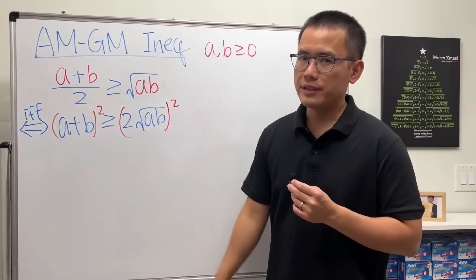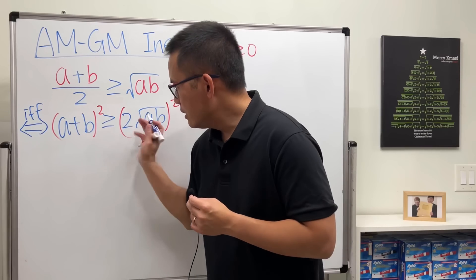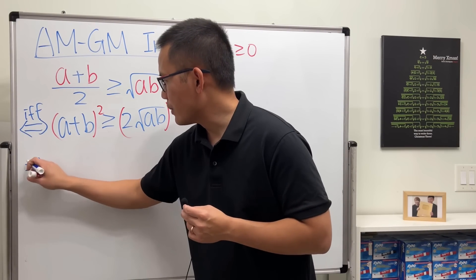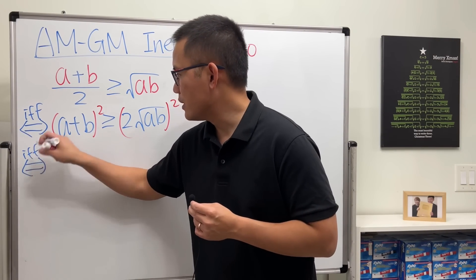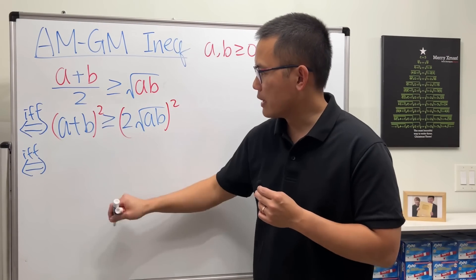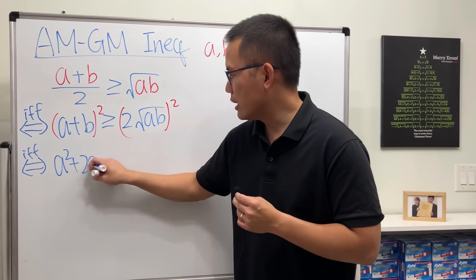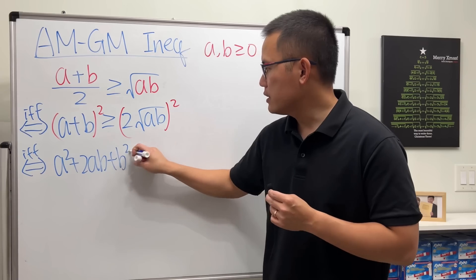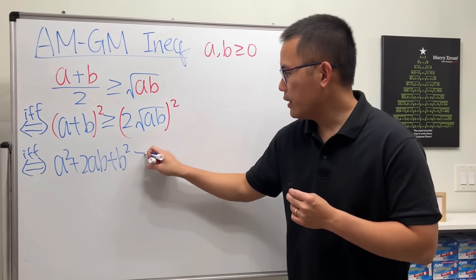So this will give us the following—and again, this is if and only if. Let's multiply this out: we get a squared plus 2ab plus b squared. That has to be greater than or equal to 4ab.